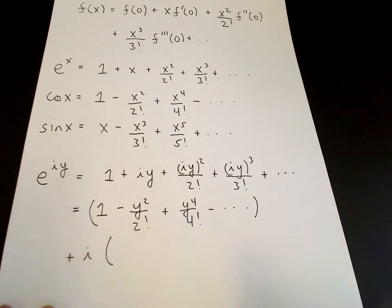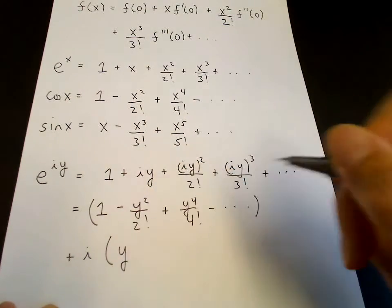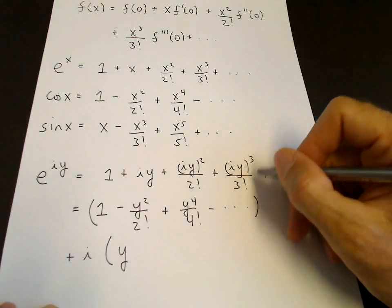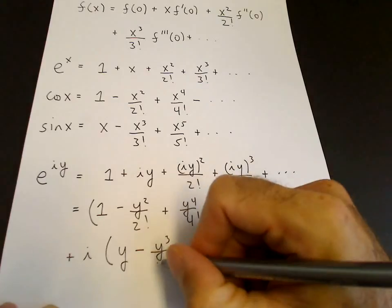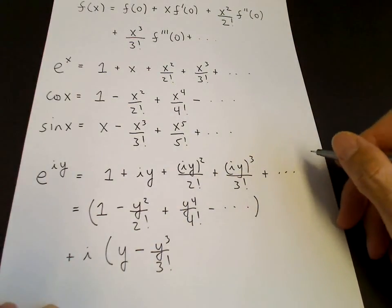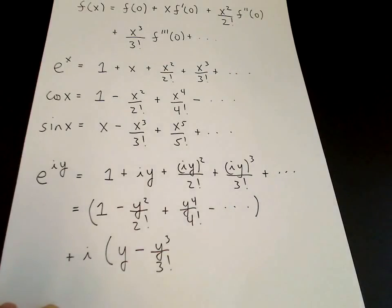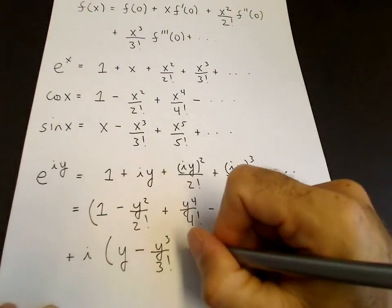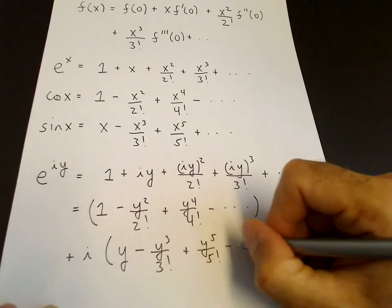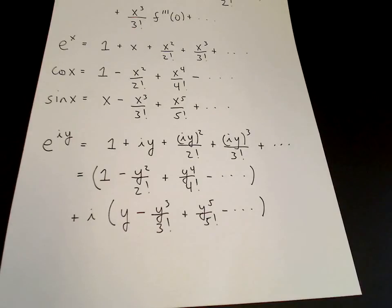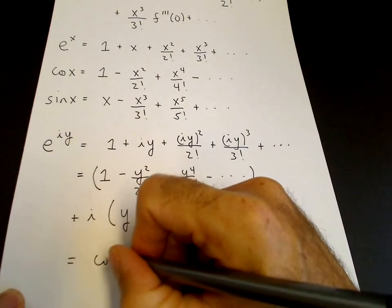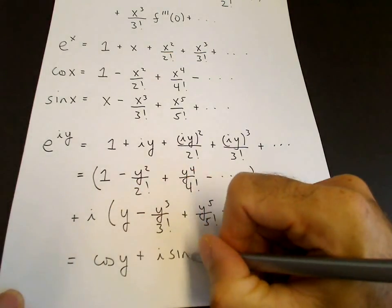Then for the imaginary part, we have plus i times: the leading term is y, then i cubed y cubed over 3 factorial — since i cubed is minus i — gives minus y cubed over 3 factorial, and then plus y to the fifth over 5 factorial. Examining these power series, we see the first is cosine y and the second is sine y. So e to the i y equals cosine y plus i sine y — a very important relationship.